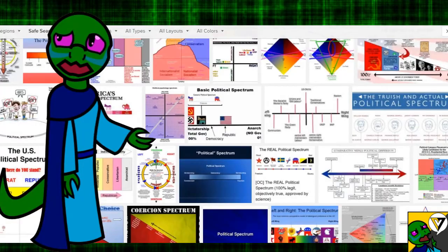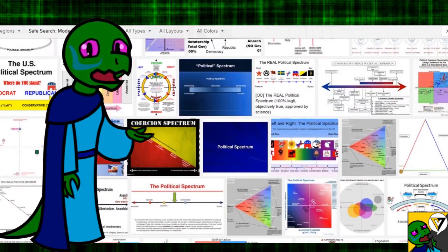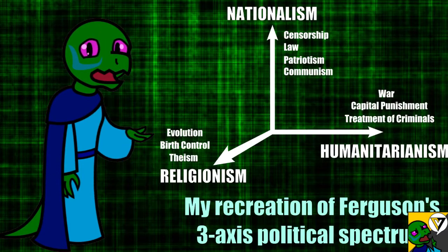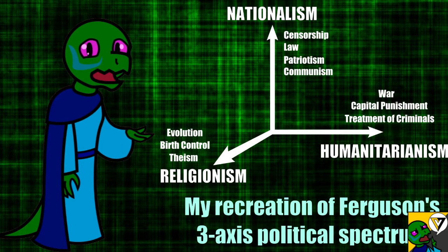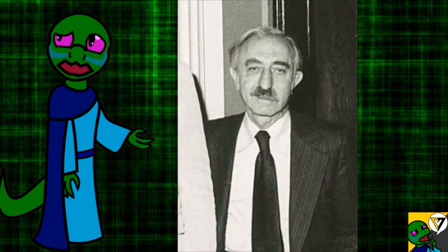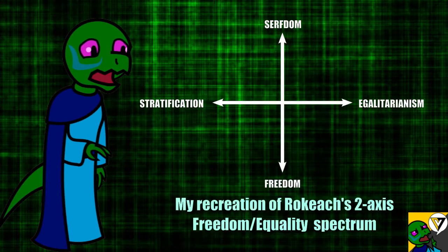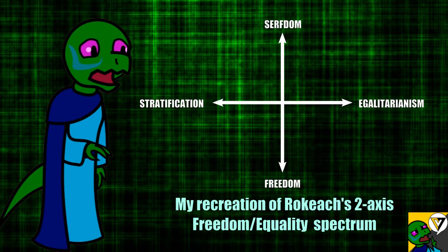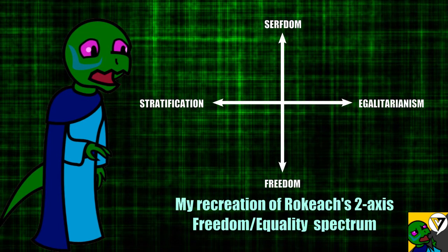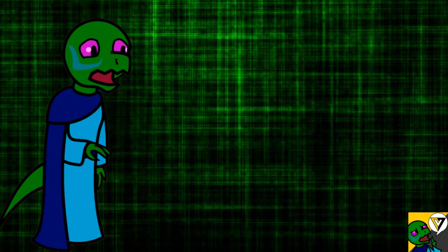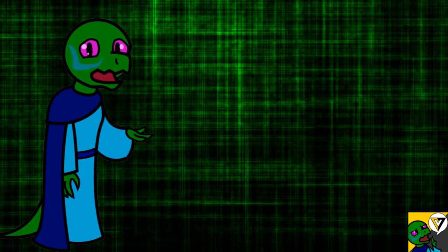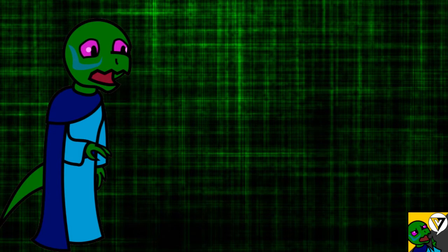Many attempts have been made to pin down these definitions objectively, as there is no clear consensus on what left and right means. Leonard W. Ferguson measured ideologies by ten factors along three separate scales. Milton Rokic proposed a two-axis political spectrum measuring the importance of freedom and equality, respectively. Additional political axes include, but are not limited to, multiculturalism versus nativism, collectivism versus individualism, religiosity versus secularism, and totalitarianism versus anarchism.